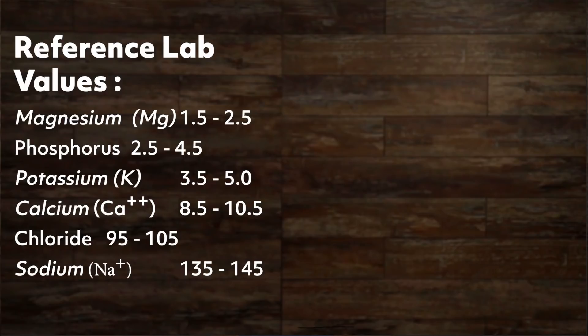Let's start by looking at the reference values you need to memorize. Remember, these lab values are a measurement of what is in the ECF, or the extracellular fluid — they don't measure the total body fluid. These are guidelines, and each lab may have a slight variation, but they will also provide a reference value with the test result. This list is in order from smallest to largest, showing that the smallest quantity of electrolyte in the ECF is magnesium, compared to sodium which has the largest amount. It's the number values that you want to memorize.